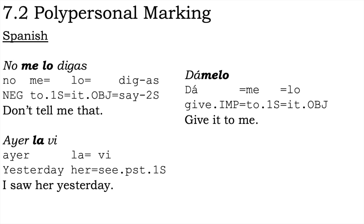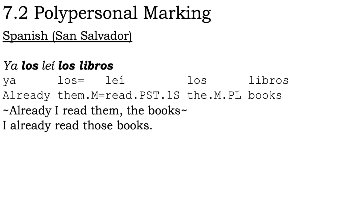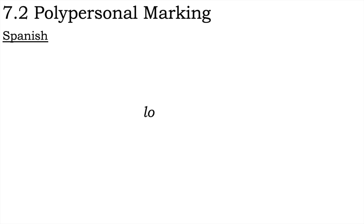In fact, in a number of Spanish dialects, these clitics are well on the way to becoming obligatory person markers, in that they often co-occur with a co-referent full noun phrase, as in San Salvadorian Spanish: ya los lee los libros. Note that many of these object pronouns are reduced versions of the full pronouns of Latin — thus lo is an example from the Latin illum, which has irregularly lost its initial vowel in the process of grammaticalisation into an unstressed clitic.